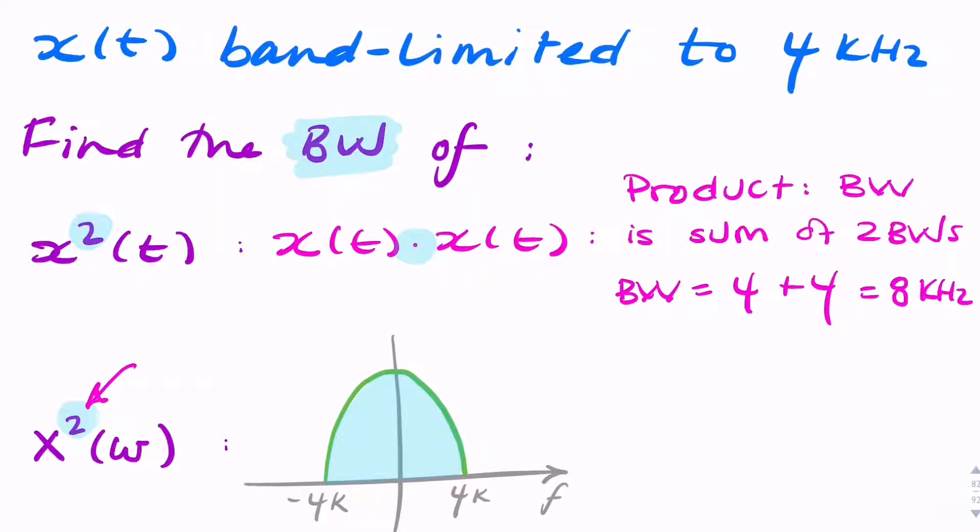For all frequencies greater than 4 kHz, you'd be multiplying 0 by 0, and the same for frequencies less than minus 4 kHz. And for all frequencies between minus 4 and 4, you'd be squaring the spectrum.